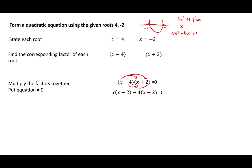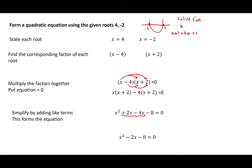From here, we expand our brackets. x times x gives us x squared. x times plus 2 gives us plus 2x. Minus 4 times x gives us minus 4x. Minus 4 times plus 2 gives us minus 8. This is all equal to 0. We then simplify by adding together our like terms, leaving us with x squared plus 2x minus 4x, which gives minus 2x, and minus 8 equals 0.